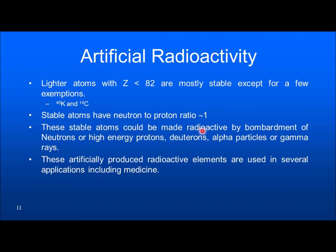Stable atoms can be made radioactive by bombardment with neutrons or high-energy protons, neutrons, alpha particles, or gamma radiation. These artificially produced radioactive elements are used in several medical applications, particularly in radiotherapy and nuclear medicine.